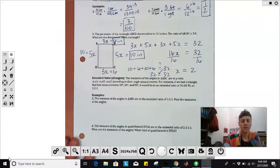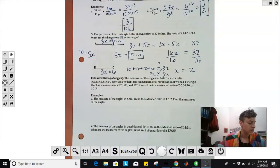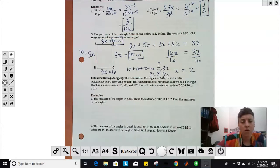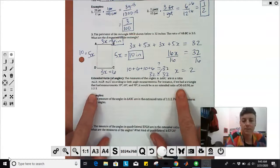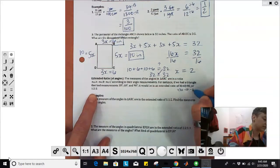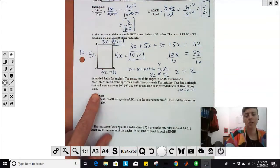Let's check out these extended ratios of angles. The measure of the angles in triangle ABC are in a ratio according to their angle measurements. For instance, if we had a triangle with measurements of 30, 60, 90, it would be an extended ratio of 30 to 60 to 90, or 1 to 2 to 3. How did we get 1 to 2 to 3 from 30, 60, 90? We divided everybody by 30.